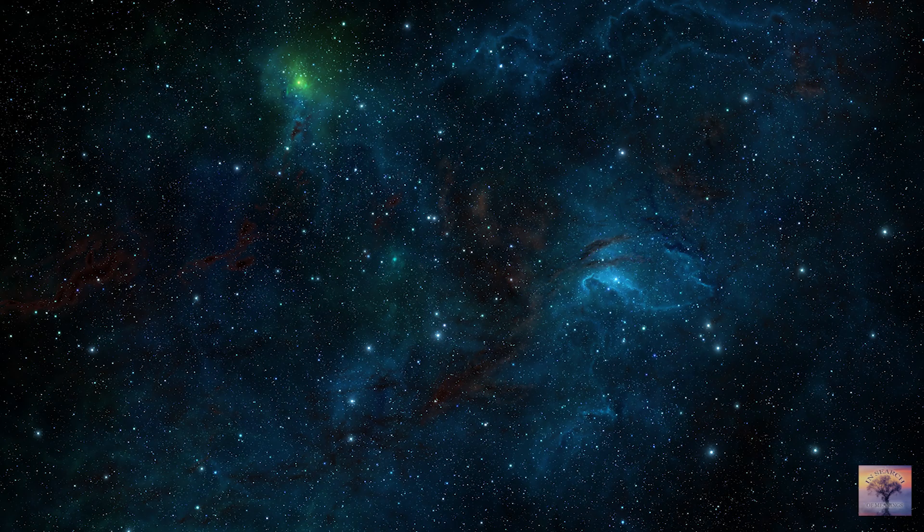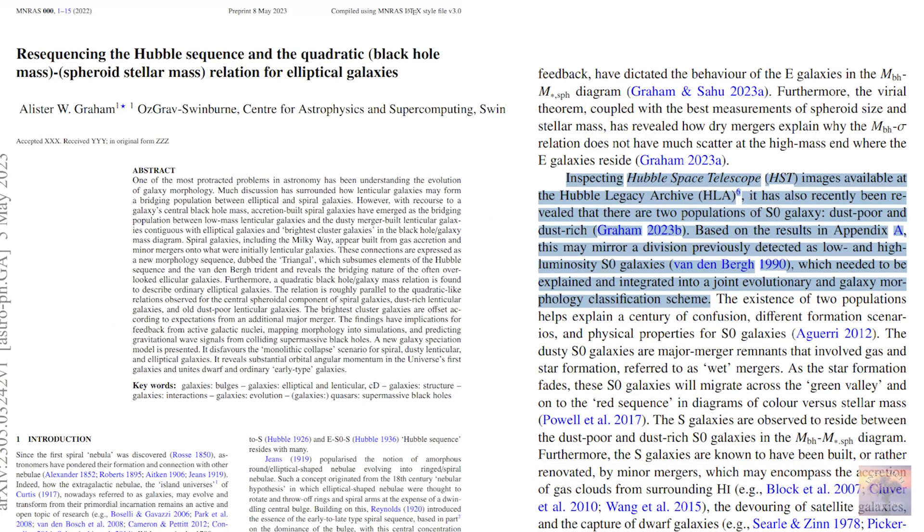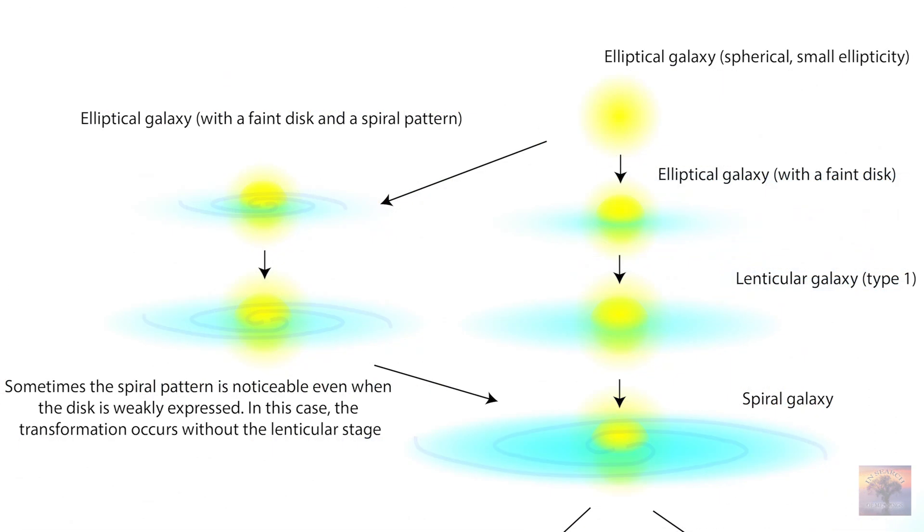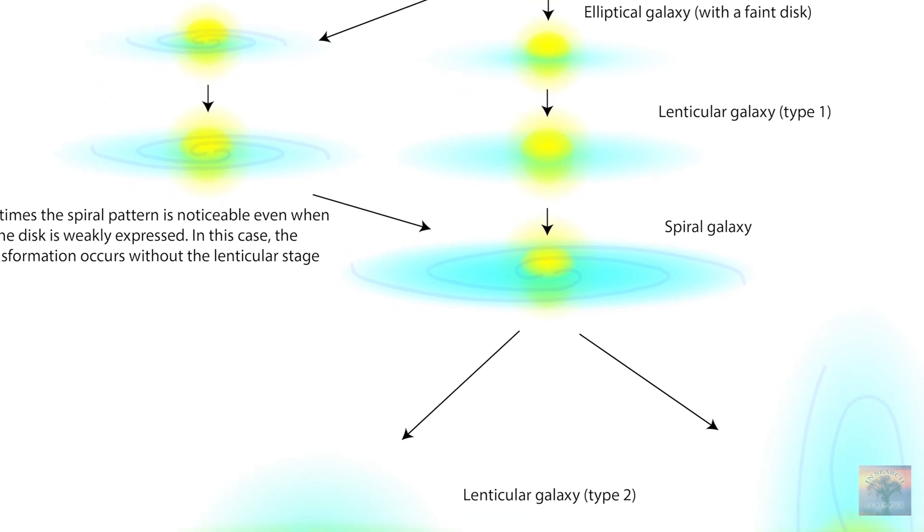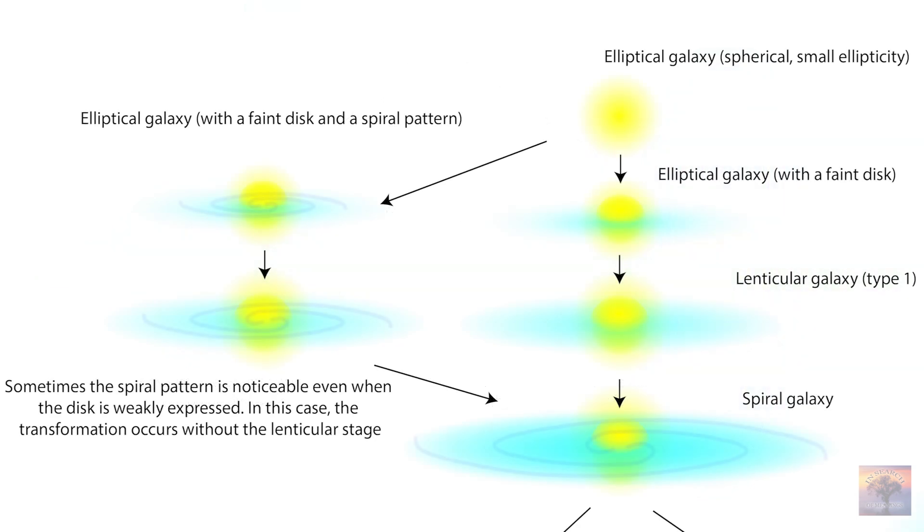It should be noted here that a significant part of the galaxies that we call lenticular are only intermediate between elliptical and spiral. It is no coincidence that astronomers notice that lenticular galaxies can be divided into two groups that differ in characteristics. One of these groups includes intermediate between elliptical and spiral. And the second includes spiral ones in which the direction of the jets has changed and they have lost the spiral pattern. Therefore, there is a certain part of lenticular galaxies in which there are neither polar structures nor visible jets. In fact, they are spiral, it's just that the jets in them are weak and we don't see this clear pattern.